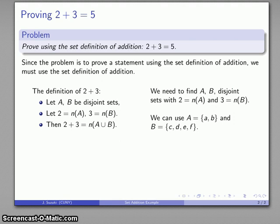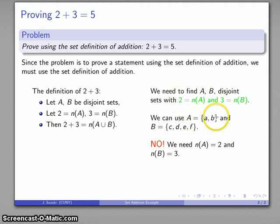So I can use A being the set {a, b} and B being the set {c, d, e, f}. Well, no I can't do that either because I need 2 to be the cardinality of A, which I'm fine with.